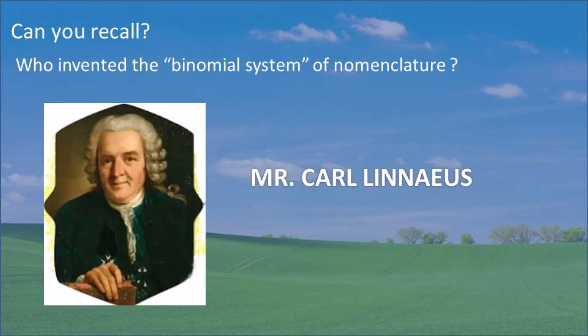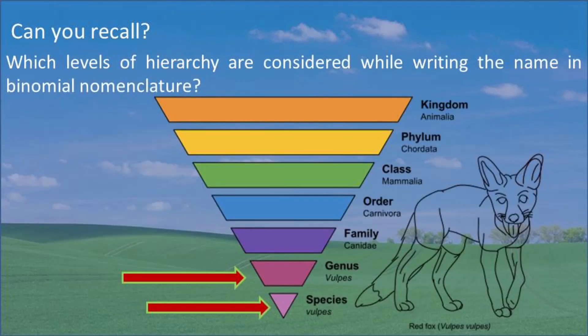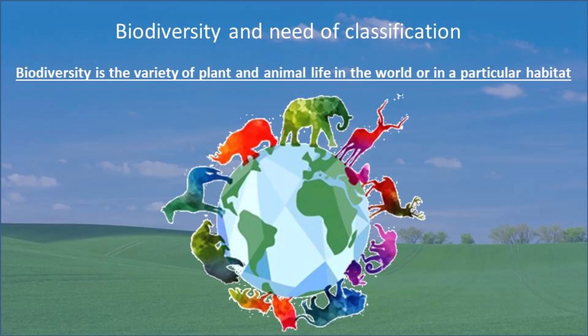The second question is: who invented the binomial system of nomenclature? The third question is: which levels of hierarchy are considered while writing names in binomial nomenclature? When writing a scientific name or binomial nomenclature, genus and species — these two levels are considered. When we write any name in the binomial system, it has two parts: the first part is genus and the second part is species.